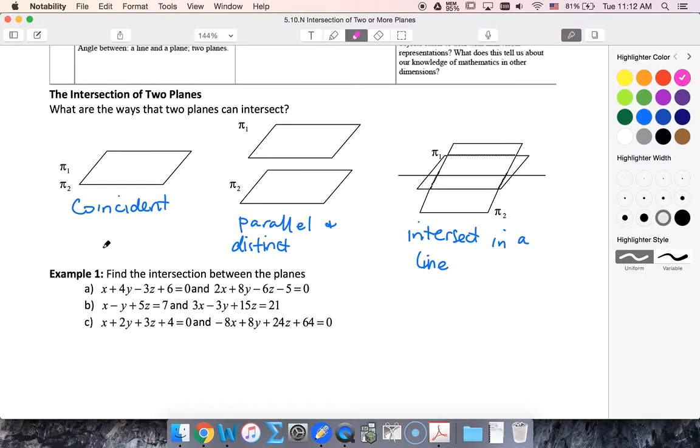So for instance, this first equation has a normal of 1, 4, -3, and then I see 2, 8, -6. Well, those are multiples of each other, but the 6 and -5 are not multiples of each other. So I could say that planes in A are parallel and distinct. Therefore, there's no intersection.